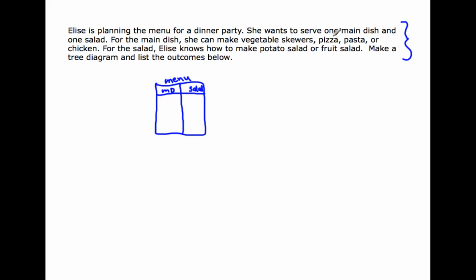For the main dish, she can make vegetable skewers — I'll represent that by V. She can make pizza, I'll represent that with P. Pasta — if I use P I might get confused, so I'll represent it with A. Or chicken with a C. For the salad, Elise knows how to make potato salad, so I'll put PS here, or fruit salad, so I'll put F here.